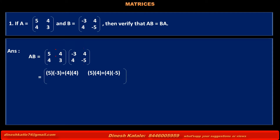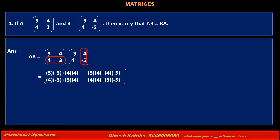Multiplying elements of the first row of matrix A by the elements of the second column of matrix B, we get 5 into 4 plus 4 into minus 5. Now multiplying elements of the second row of matrix A by the corresponding elements of the first column of matrix B, we get 4 into minus 3 plus 3 into 4. Similarly, multiplying elements of the second row of matrix A by the corresponding elements of the second column of matrix B, we get 4 into 4 plus 3 into minus 5.